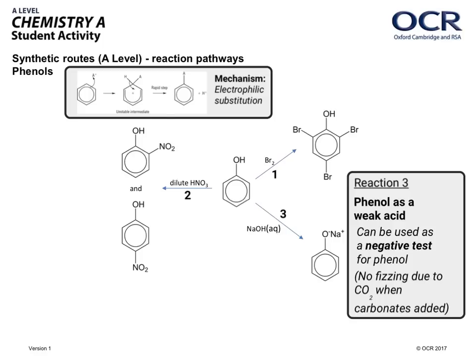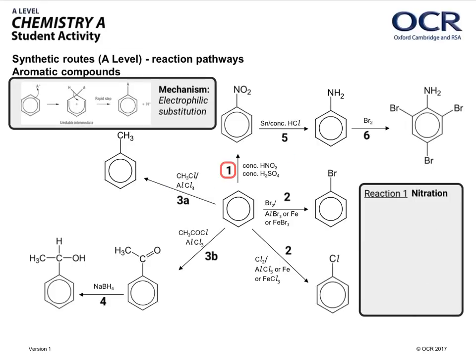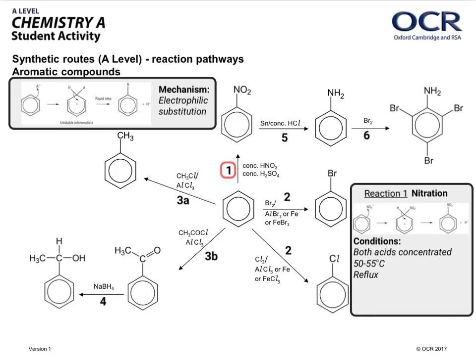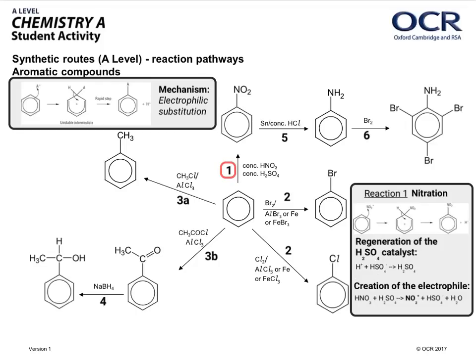When looking at synthetic routes through aromatic chemistry, whenever you get a substitution on an aromatic ring it always goes by electrophilic substitution. I'm going to leave a box containing the basic mechanism using curly arrows. Reaction 1 is a nitration — you're substituting the nitro group onto the benzene ring. The conditions are that both acids have to be concentrated, and you reflux at 50 to 55°C. You need to be able to write the equation for creation of the electrophile: the two concentrated acids react to make NO₂⁺. You also need to show the regeneration of the H₂SO₄ catalyst using the H⁺ that comes off at the end.